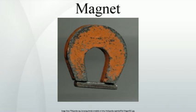The earliest known surviving descriptions of magnets and their properties are from Greece, India, and China around 2,500 years ago. The properties of lodestones and their affinity for iron were written of by Pliny the Elder in his Encyclopedia Naturalis Historia. By the 12th to 13th centuries AD, magnetic compasses were used in navigation in China, Europe, and elsewhere.